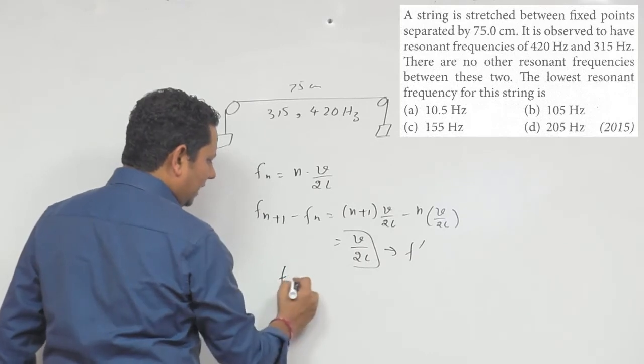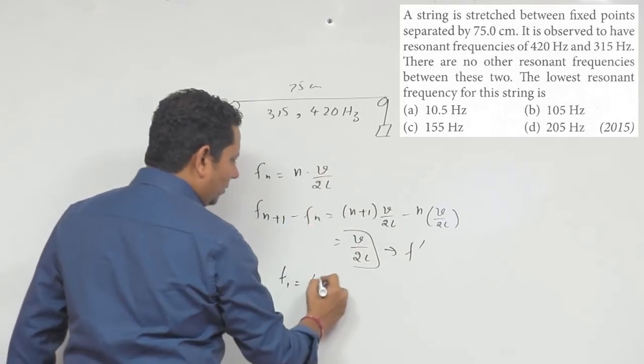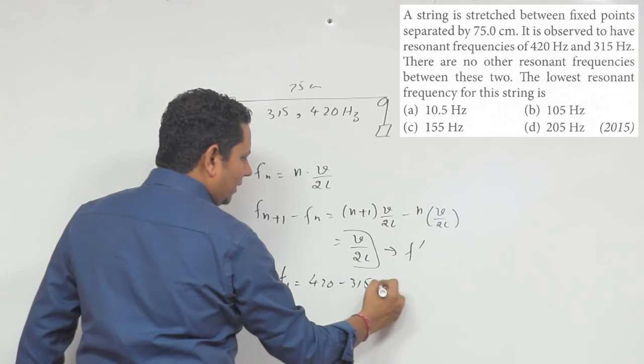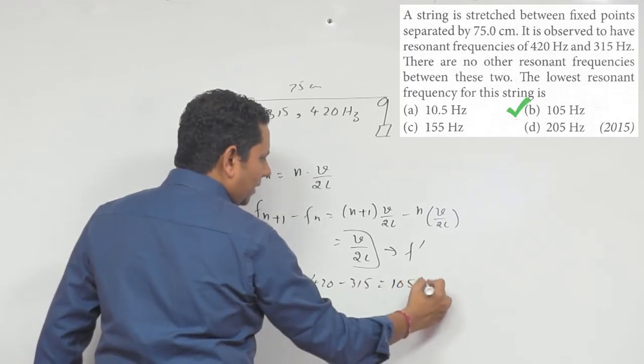The fundamental frequency f1 equals 420 minus 315, which equals 105 Hz.